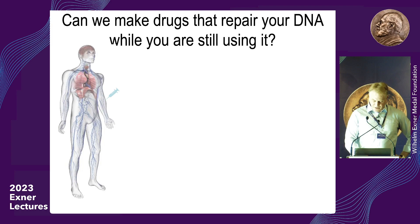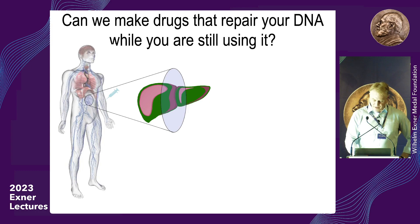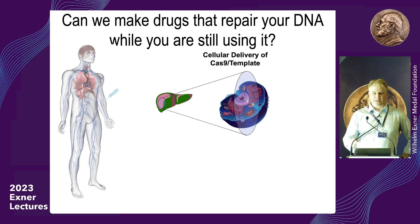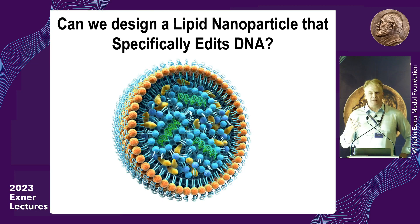The dream is that you can inject a drug into a patient — say, for a liver disease — and have these editing nanoparticles travel through the body, reach the liver, enter the disease cells, deliver your genome editing complex that specifically latches onto the right part of the DNA you're trying to fix, repair it, and now you have a healthy organ. We think it's possible, and we think it's going to be these same types of lipid nanoparticles that do it.